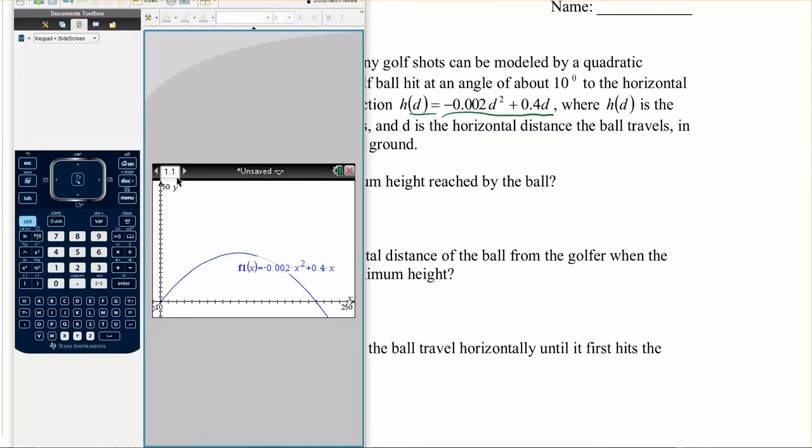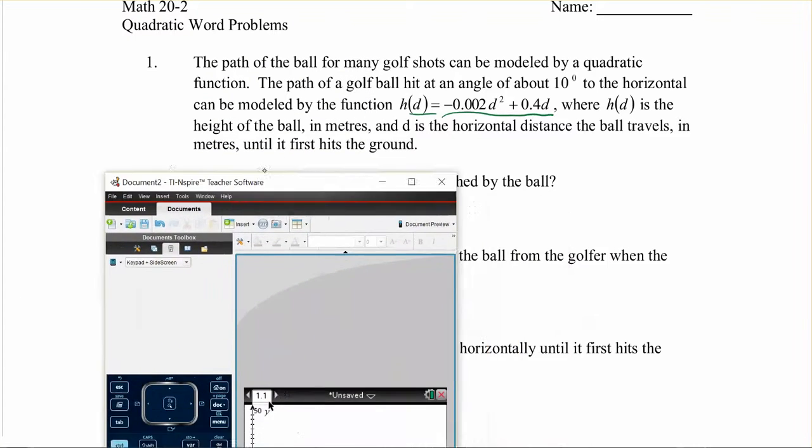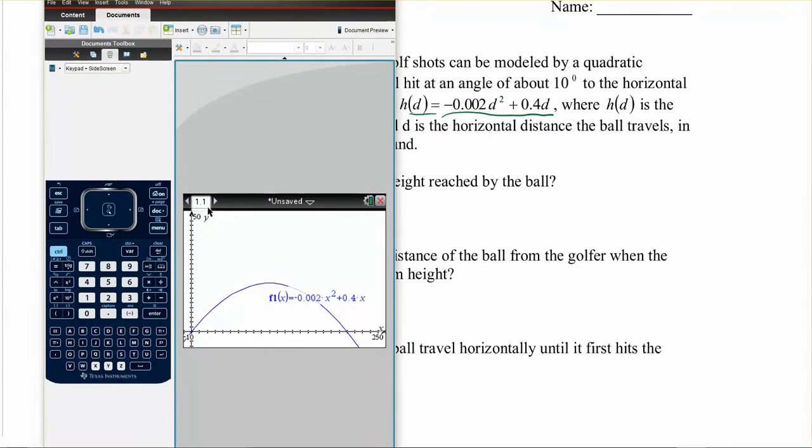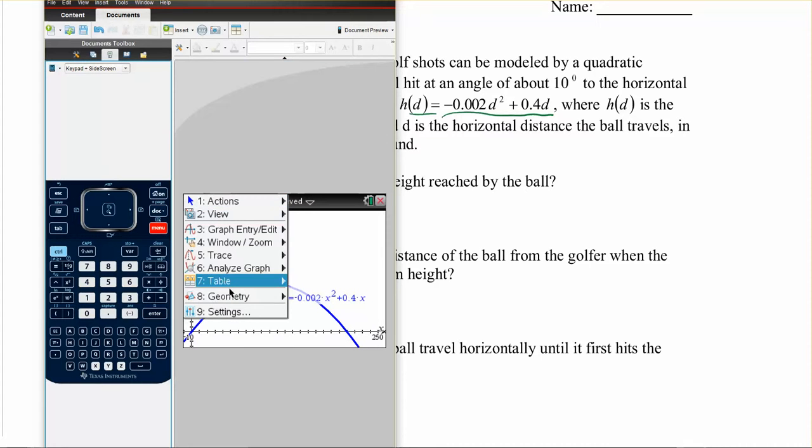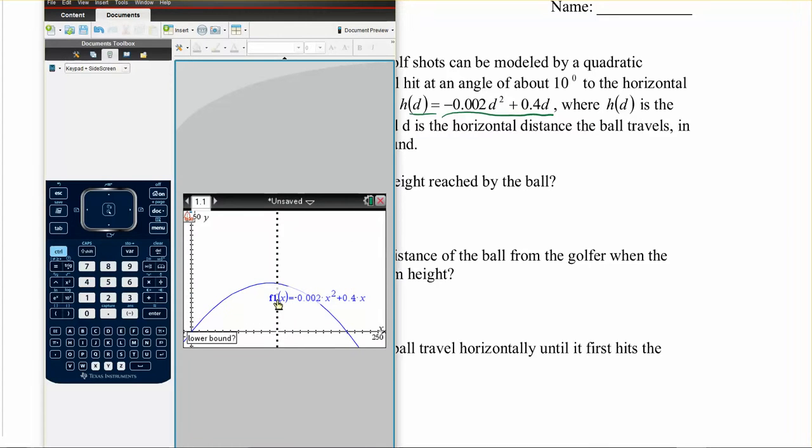And then it's looking for what's the maximum height reached by the ball? Well H of D, that is my height, right? So my Y axis, that's all it's looking for. So looking for the very peak up here. So all we have to do is go menu, analyze graph, and then we're looking for a maximum. We're looking for a vertex at the maximum. So we're going to go maximum.